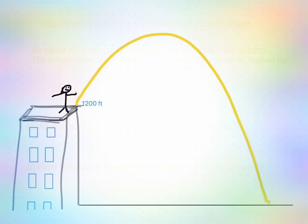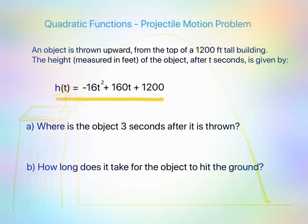Let's go look at the questions A and B. So A is asking us, where is this object after 3 seconds after it's thrown? So we want to let t, the time, equal to 3.